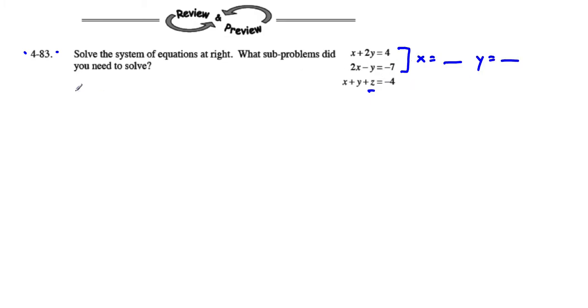So here we go. I'm going to say x plus 2y equals 4. Just rewriting my system over here, getting it ready to solve. And we have 2x minus y equals negative 7.